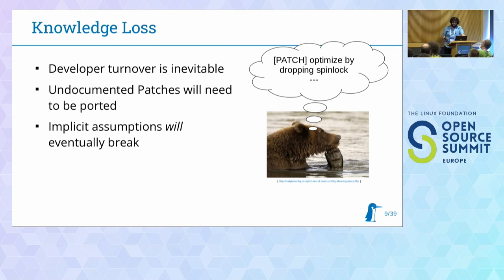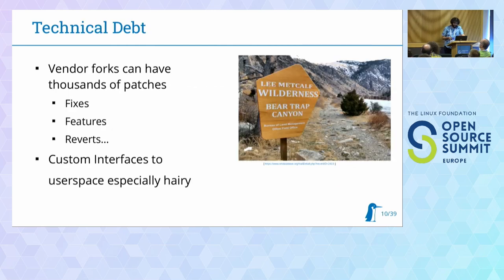And that's actually the good side of knowledge loss, because at least you know there is a problem. Then you have implicit assumptions that you don't know about, which will eventually break because you depended on something behaving in an undocumented way or in a specific order. This brings you to technical debt.